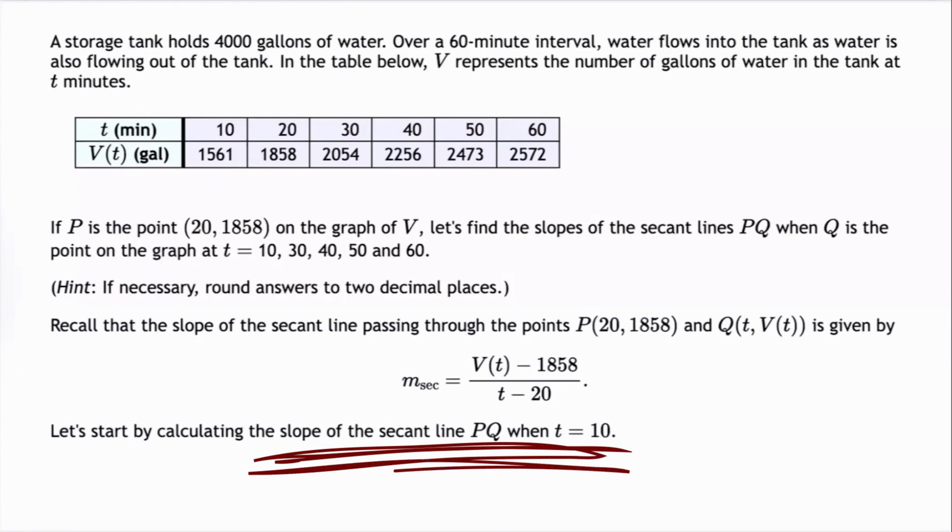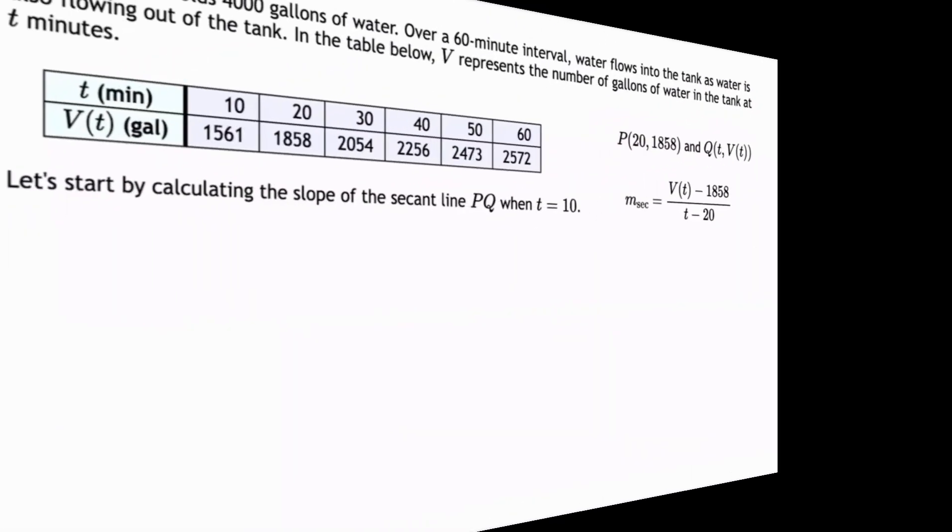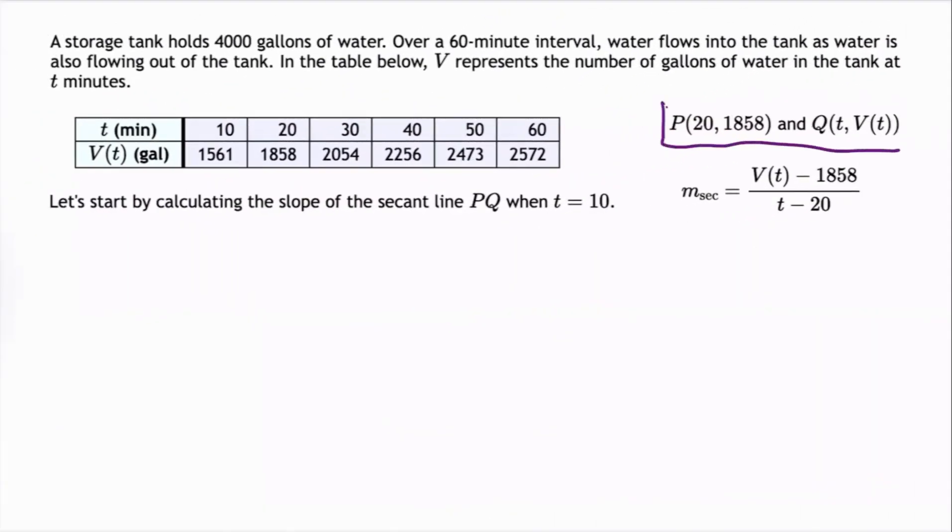Let's start by calculating the slope of the secant line PQ when T equals 10. This is the only secant line we're going to calculate in this video, but we need to give ourselves some more room. So here's the given information again. We have P is the point (20, 1858) and Q is the point (t, V(t)), and we know that t is 10.